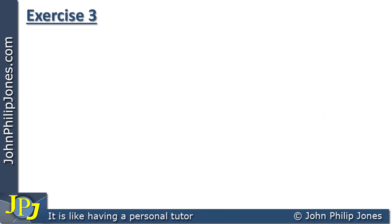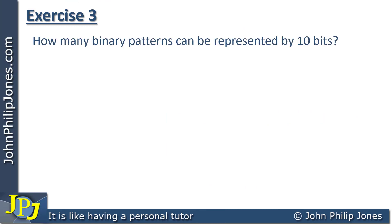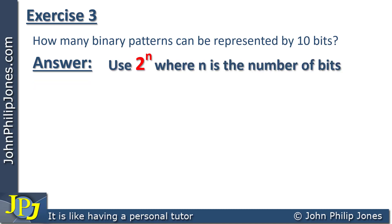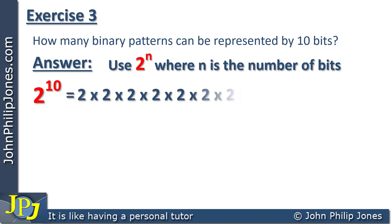How many binary patterns can be represented by 10 bits? Using the same formula, two to the n where n is the number of bits, this becomes two raised to the power of 10 — multiplying the two together 10 times — giving us 1024 possible combinations of binary bits when using 10 bits. Two to the 10 equaling 1024 is an important one to remember.